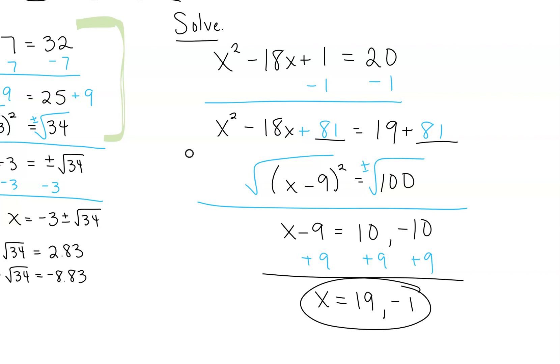All right, so here we have our work. We started by subtracting the 1 so that our x squared plus bx were by themselves. Half of 18 is 9, squared is 81, so we added 81 to both sides. Factored the left side to x minus 9 squared. Right side gave us 100, took the square root of both sides. Since the square root of 100 is 10, I went ahead and wrote 10 and negative 10 separately, so that then I could go ahead and write plus 9 and plus 9 for both of them, and then I could get 19 and negative 1. Good? All right.